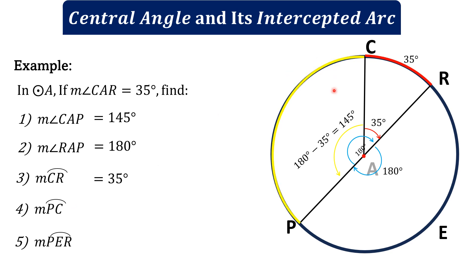Arc PC is the intercepted arc of central angle CAP. If angle CAP measures 145 degrees, then since a central angle's measure equals the measure of its intercepted arc, arc PC also measures 145 degrees.